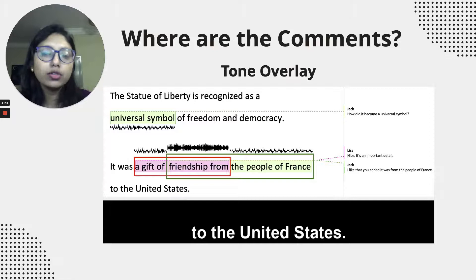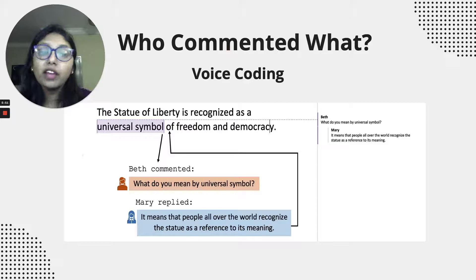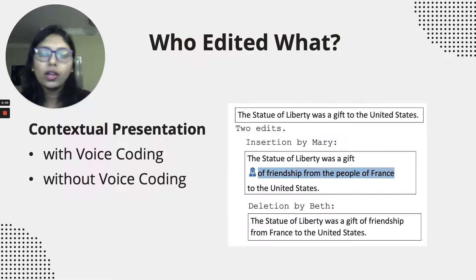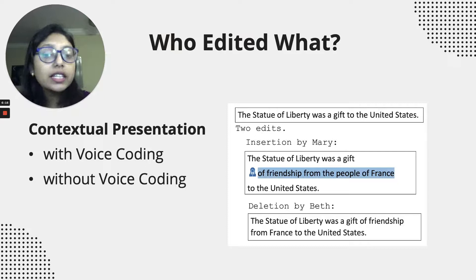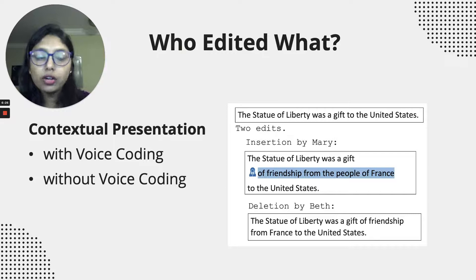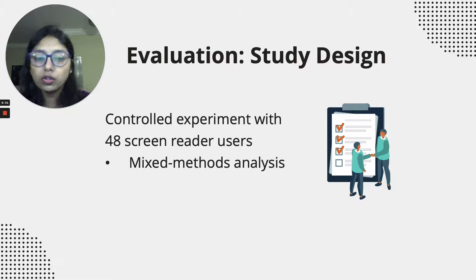Next, to present who commented what, we applied voice coding, where different co-authors' comments are read using distinct text-to-speech voices. Finally, to indicate who edited what, we presented edits in the context of a sentence — instead of just providing spoken announcements like 'Beth inserted' or 'Mary deleted,' this technique reads both the original and modified versions of a sentence. In the variation with voice coding, the text portion inserted by a co-author is read in their corresponding text-to-speech voice. To evaluate these auditory techniques, we conducted a mixed methods controlled experiment with 48 screen reader users.